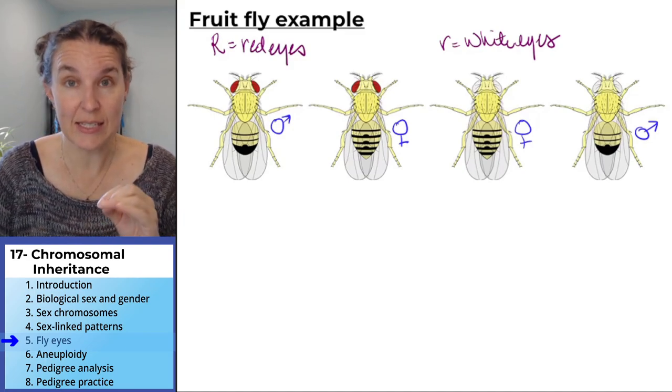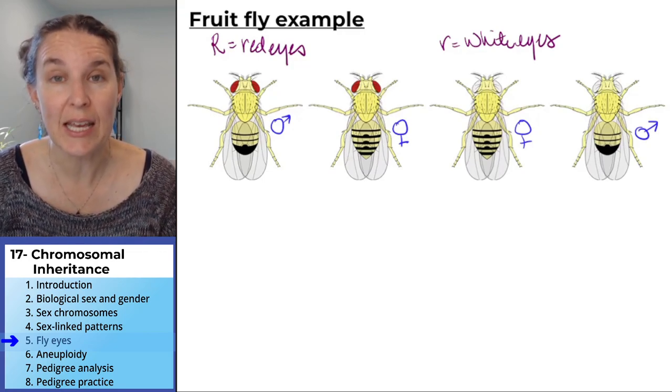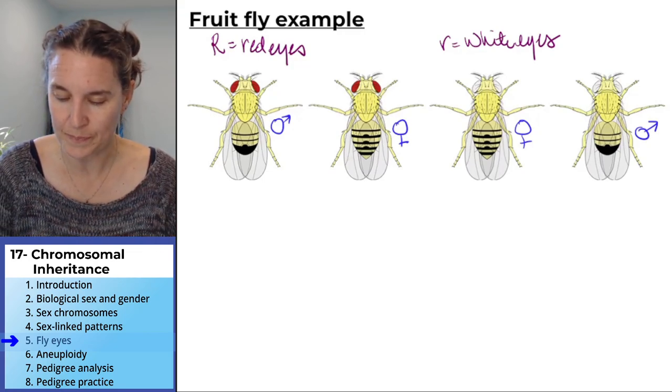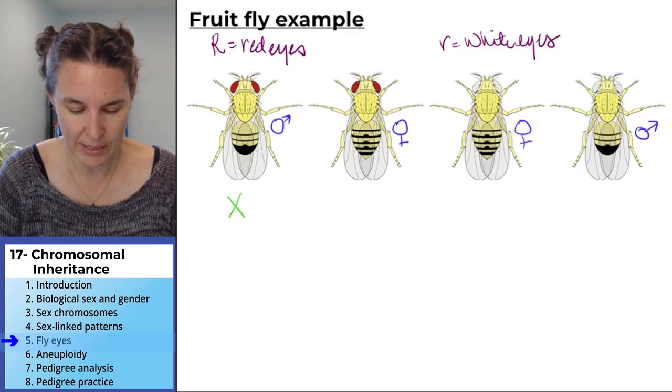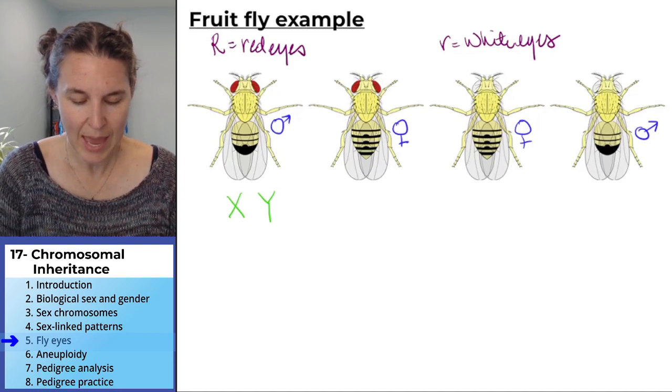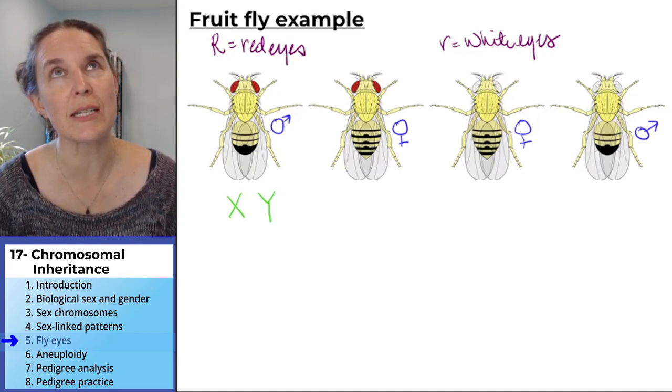It just so happens that this eye color allele or eye color gene is found on the X chromosome. So our male does indeed have XY, and this guy has red eyes, so super interesting to think about this.